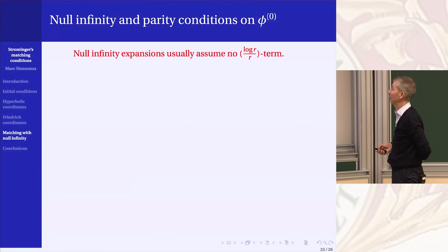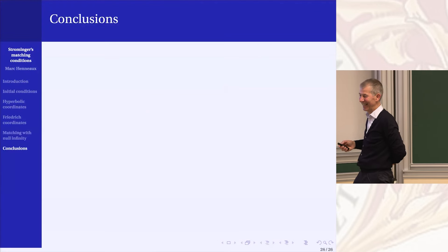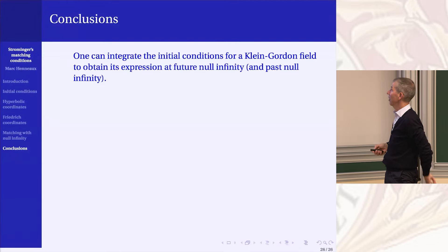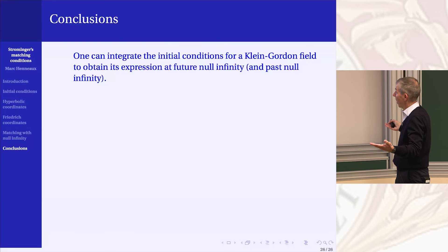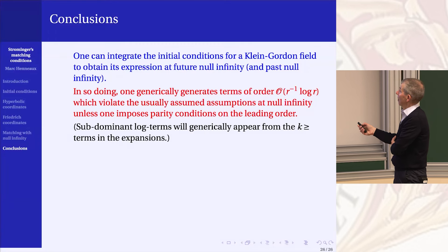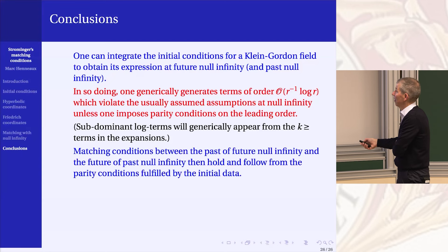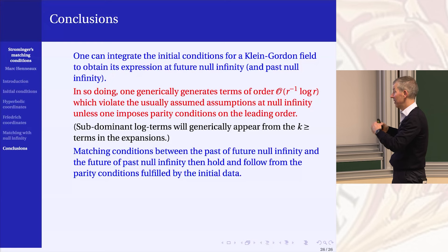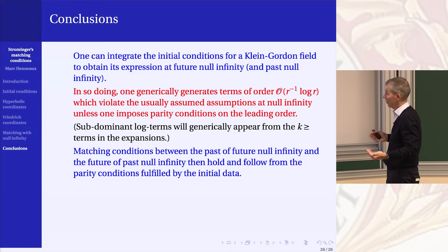For the scalar field, things are very simple: we can integrate the initial conditions and justify — from initial conditions obeying parity conditions — the matching conditions assumed at null infinity. As also noted, there might be sub-dominant logarithmic terms that generically appear; if you really want to kill them, you would need an infinite number of conditions at each order of 1/R. But the key result is that the matching conditions assumed between the past of future null infinity and the future of past null infinity are consequences of the parity conditions fulfilled by the initial data.